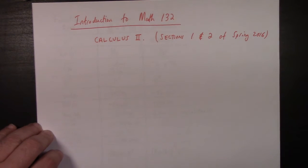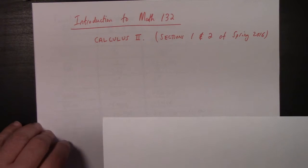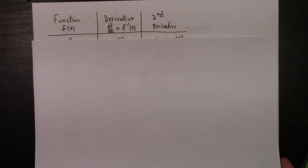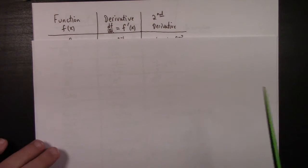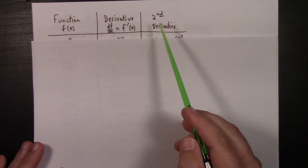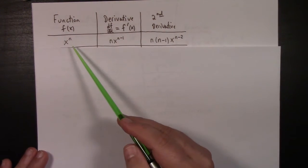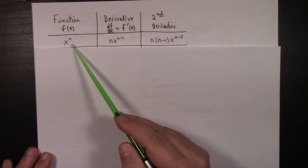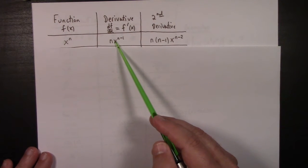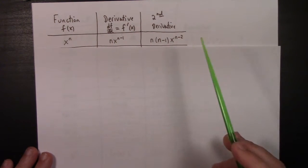Let me take a little trip down memory lane here. In Calculus 1 we learned about how to differentiate a function. We have a function f of x, we have its derivative f prime of x, and you can even calculate the second derivative. Here are some things we should already know. If you have the power function x to the n, you get n times x to the n minus 1 for the derivative.